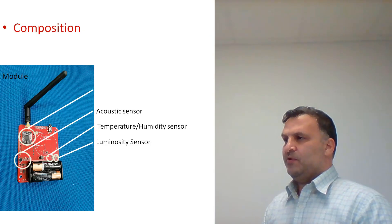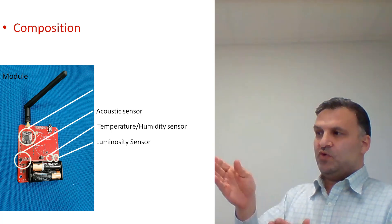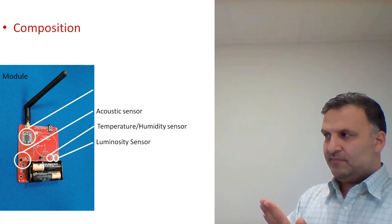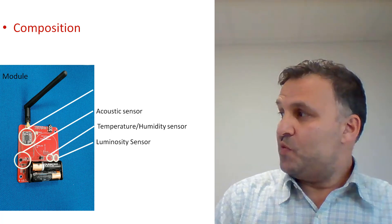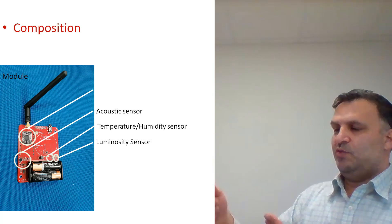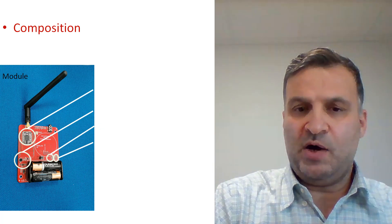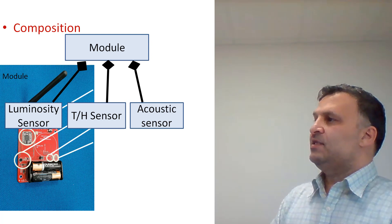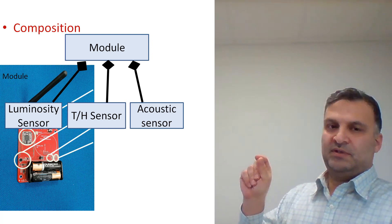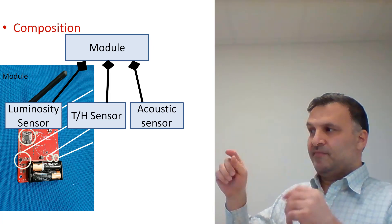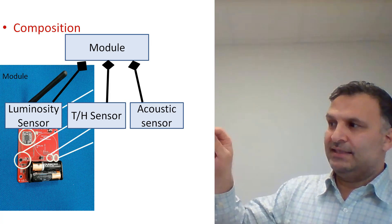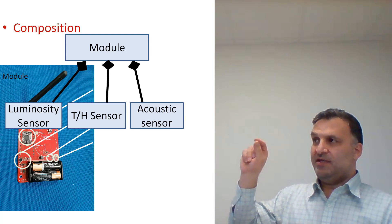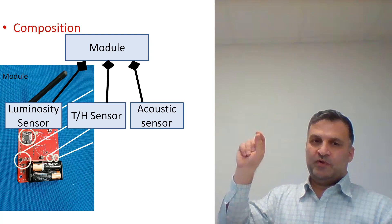Composition: we know that the module contains many sensors inside — acoustic sensors, temperature sensors, humidity sensors, luminosity sensors, etc. We represent this with a filled diamond on the side of the container. So the module contains luminosity sensor, temperature sensor, humidity sensor, and acoustic sensor. This relationship is called composition.